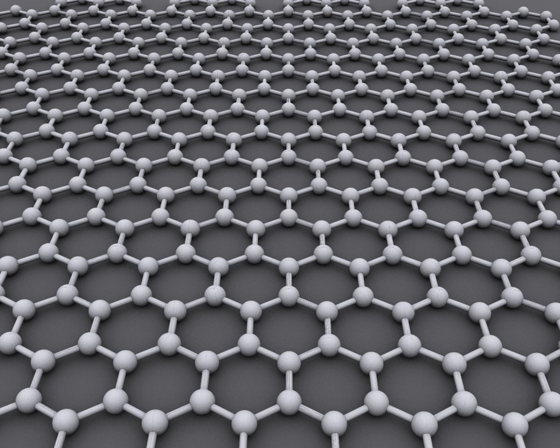Graphene is a semi-metal with small overlap between the valence and the conduction bands. It is an allotrope of carbon consisting of a single layer of carbon atoms arranged in a hexagonal lattice. It is the basic structural element of many other allotropes of carbon, such as graphite, diamond, charcoal, carbon nanotubes and fullerenes.